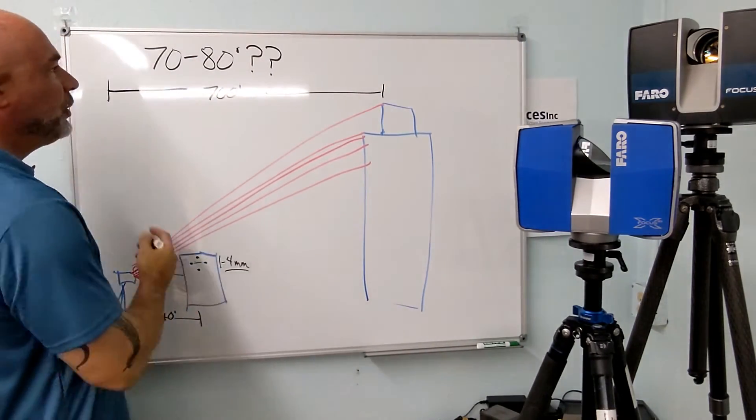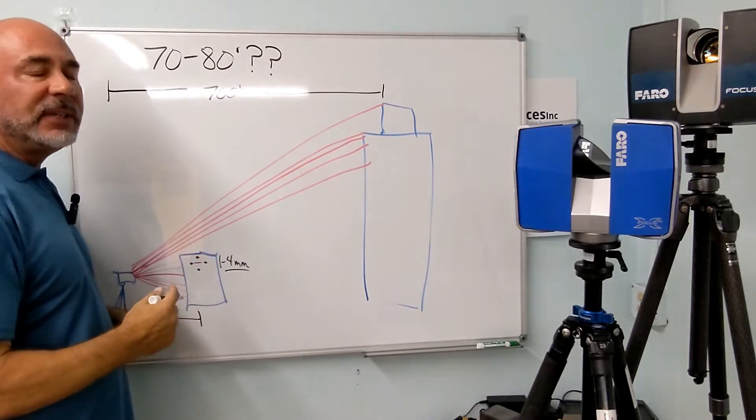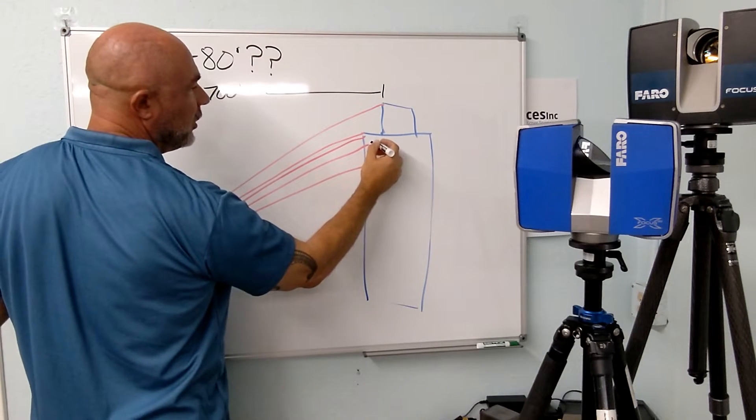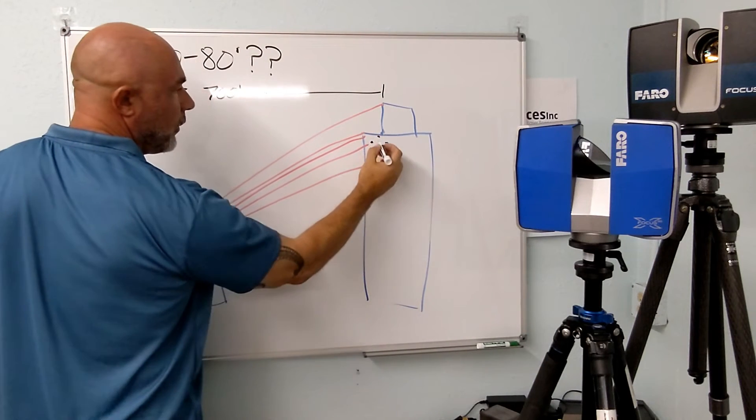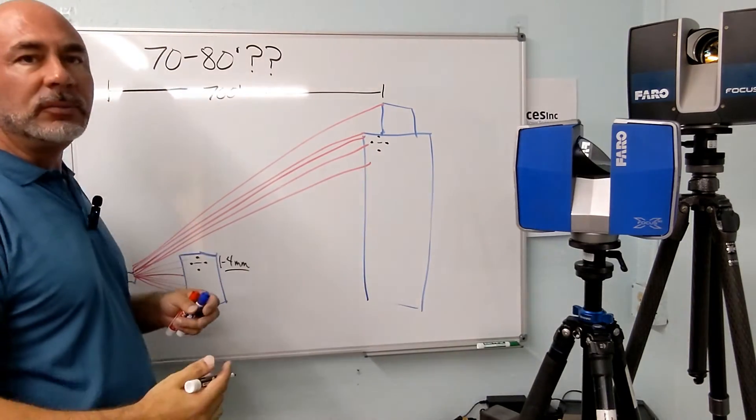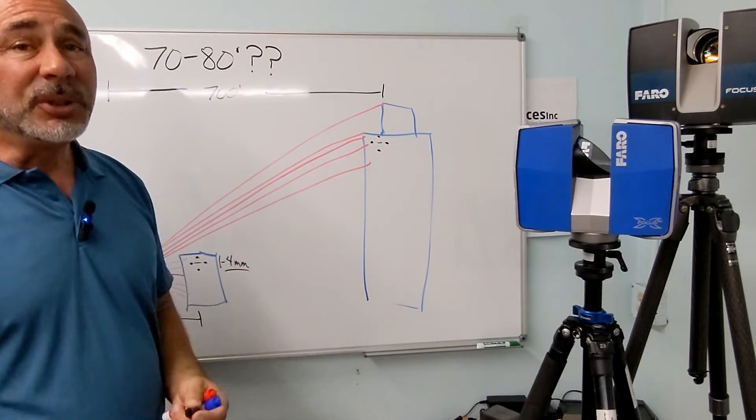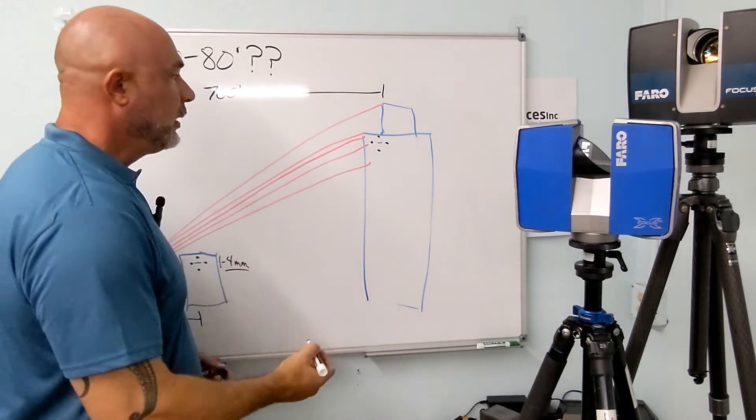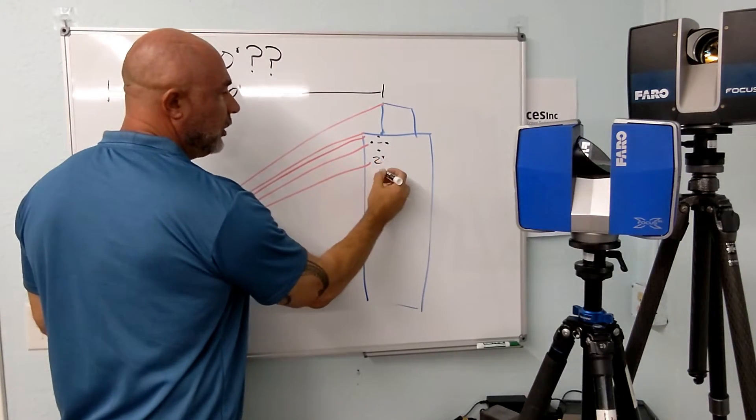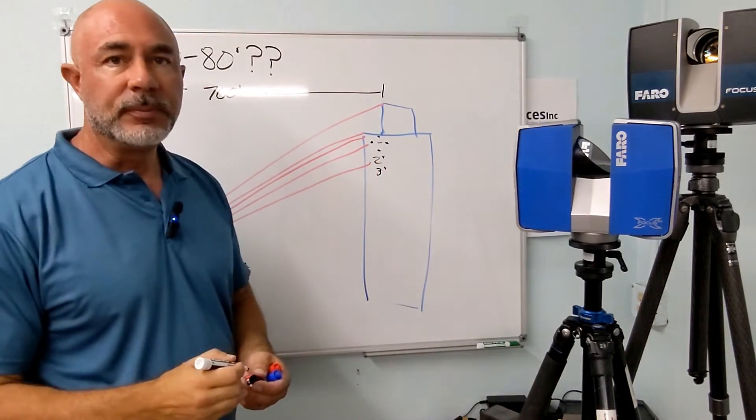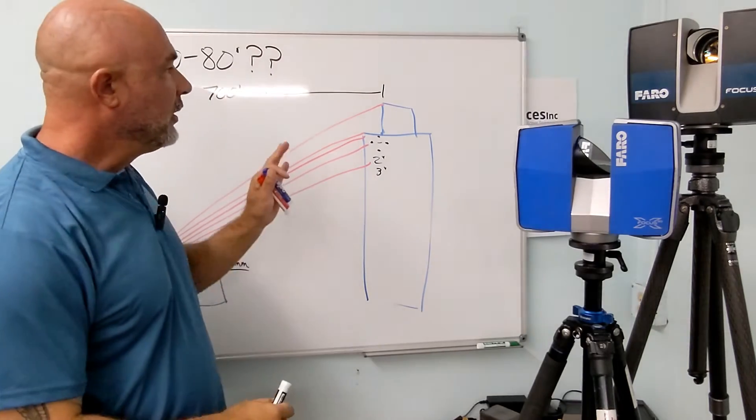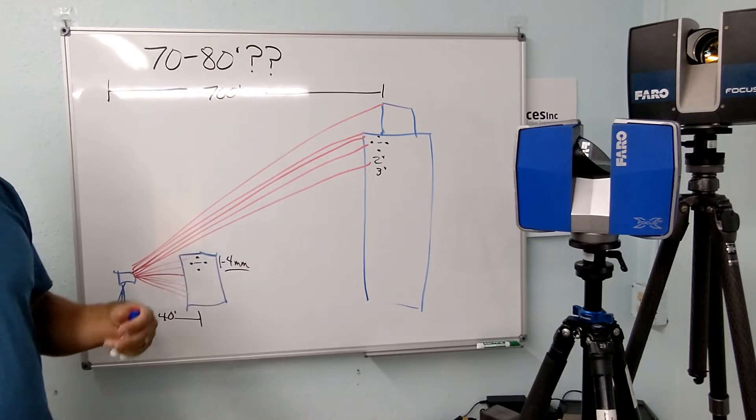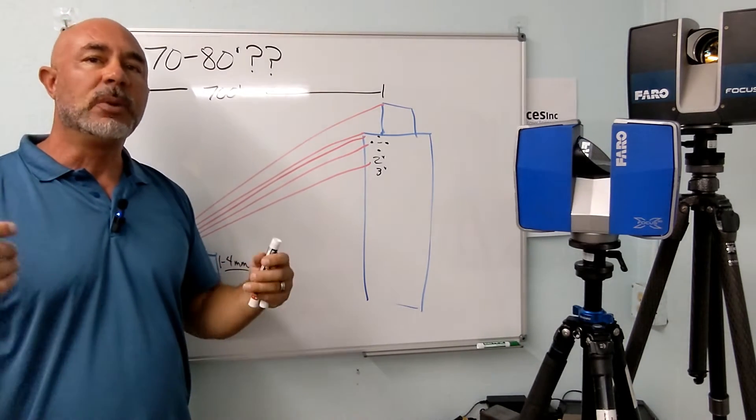Any way you slice it, as you get 700 feet away, these points are now going to be further apart. So the points out here on this building, the left to right or the up to down, they may be inches apart from each other. I can't tell you how many inches, but it could be two inches or three inches or even more. So the data that's captured beyond the 70 to 80 feet is not data that you necessarily want to be modeling with.